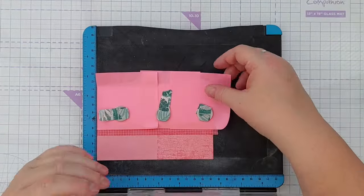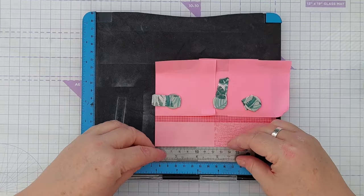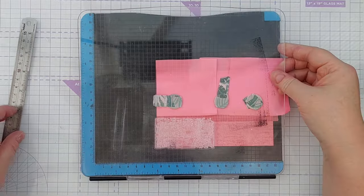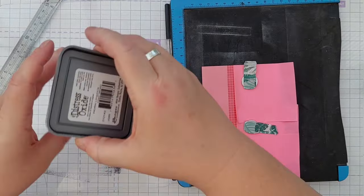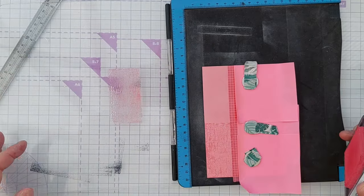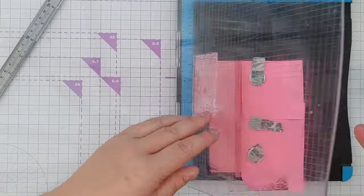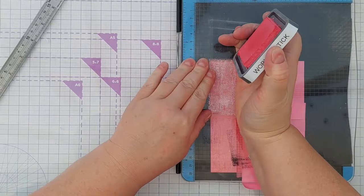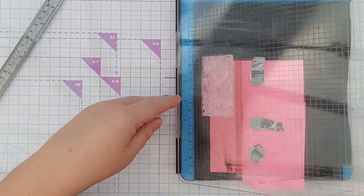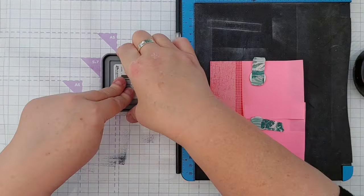To stamp the other half of the panel, all I did was pop the metal ruler back in to butt my card up against it, but slide the card down the appropriate amount so that I could stamp the image on the other half of the card. There was a little bit of a gap between the two stamped images, but I was planning to put something over that anyway, so I wasn't worried about that.